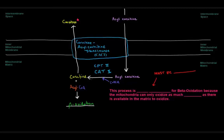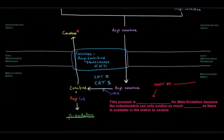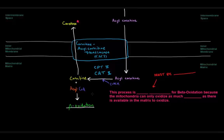Once carnitine and acyl-CoA are regenerated, the acyl-CoA goes to beta-oxidation while the carnitine is translocated back across into the intermembrane space. Depending on the scenario, the carnitine either joins another acyl-CoA in the intermembrane space or exits to the cytoplasm to join another acyl-CoA, become acyl-carnitine, and re-enter. The carnitine-acylcarnitine translocase moves acyl-carnitine in and kicks carnitines back out so the cycle can repeat.